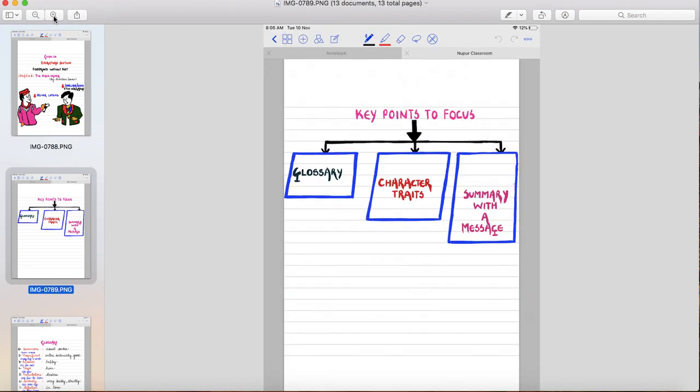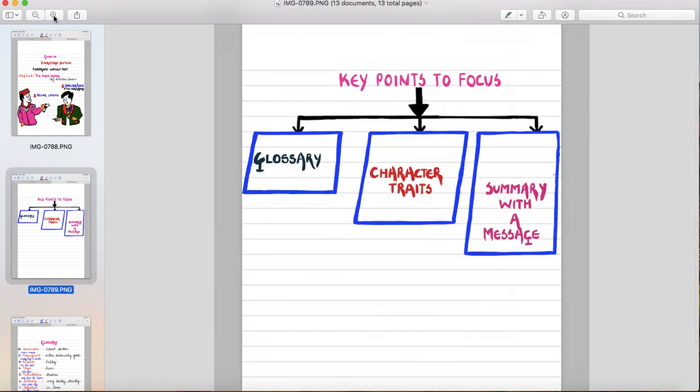Now let's see the key points to focus. Firstly I would like to give you meanings of difficult words from chapter 8, The Hack Driver so that whenever you read the chapter, you can find it easy to understand. And I am also providing you the correct pronunciation in British English of the difficult words. Then we will discuss character traits and then summary with a message.